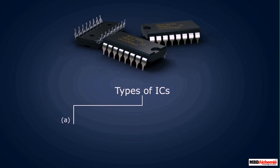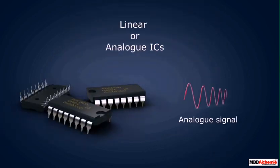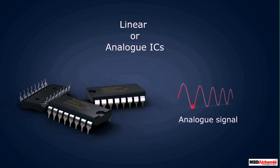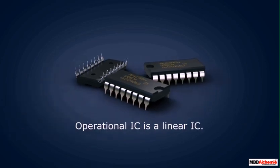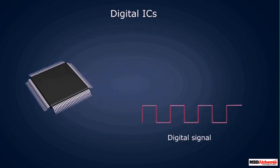ICs can be grouped into two categories depending on the nature of input signals: (a) linear or analog ICs, and (b) digital ICs. In linear ICs, the input signals are analog signals which change smoothly and continuously over a range of values between a maximum and a minimum. The output is almost directly proportional to the input — that is, it varies linearly with the input. An operational amplifier is an example of a linear IC.